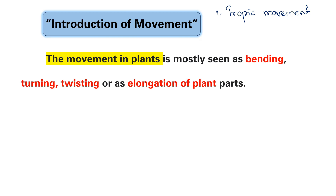The second type is nastic movement, also called autonomic movement. In this case, the nastic movement has a role in the protection of plants, so it is not a movement directed toward a particular stimulus.